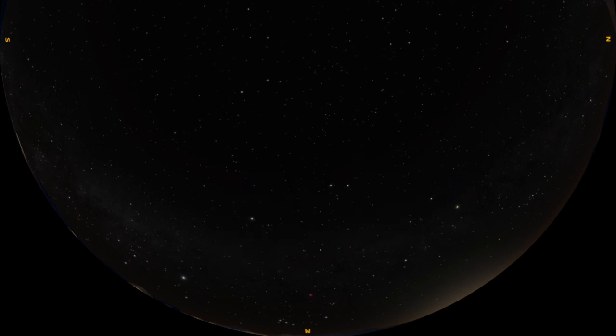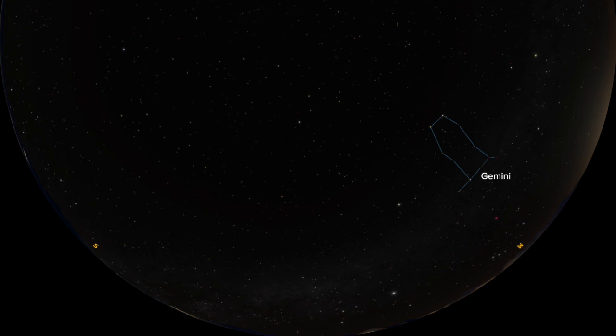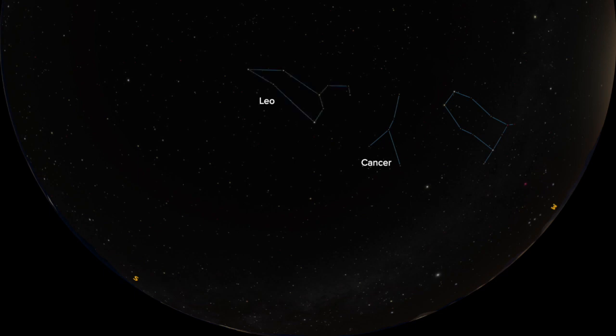As we move into our night sky, we'll begin with our zodiacal constellations. The first is Gemini, the twins, with the two bright stars Castor and Pollux, followed by Cancer, the crab, and Leo the lion with the bright star Regulus.